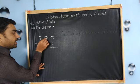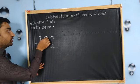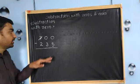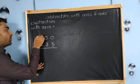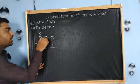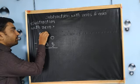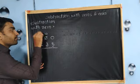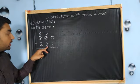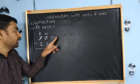So this zero will ask its higher place for help. From seven, seven can help you. So from seven, we will borrow one — six will remain there. And this zero's power will increase and it will become ten. Now this zero, before doing subtraction, it will help the lowest place.